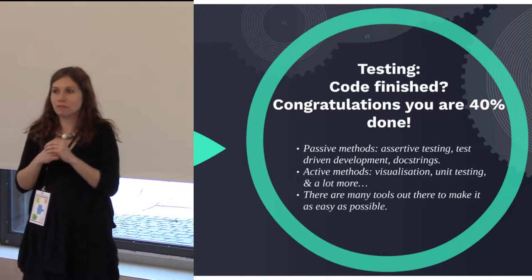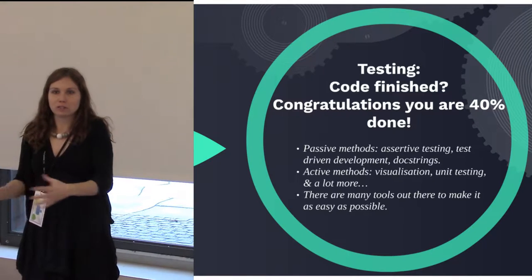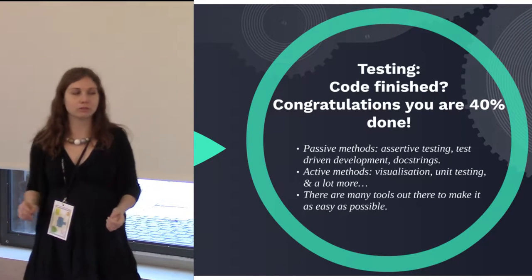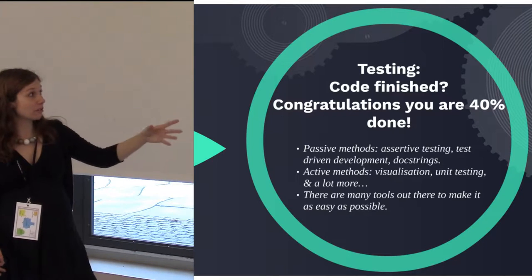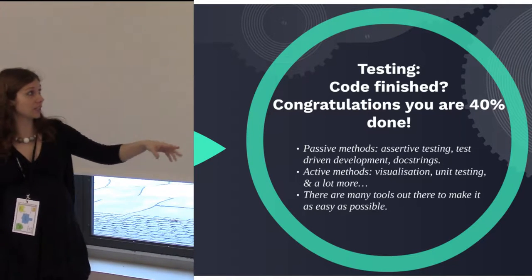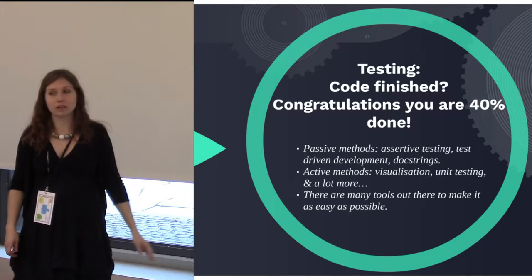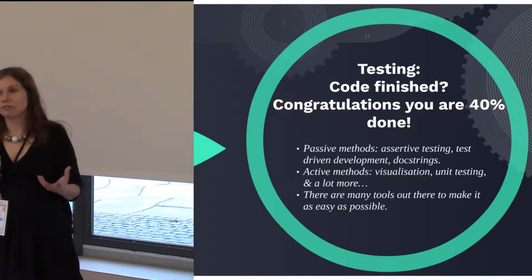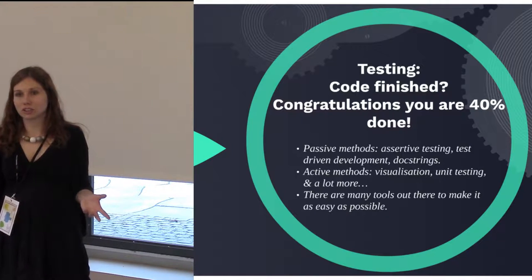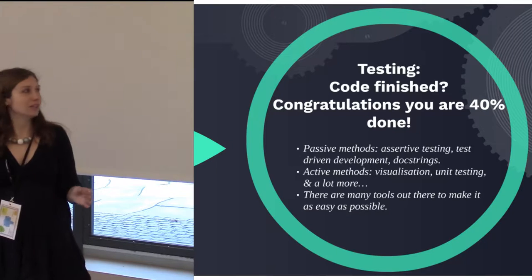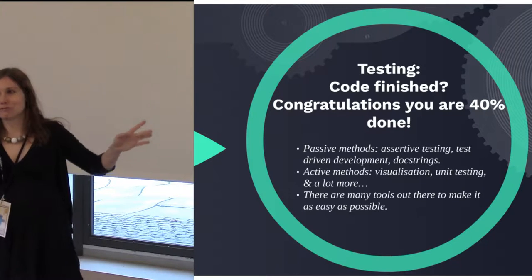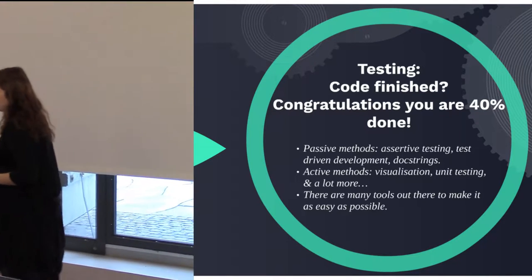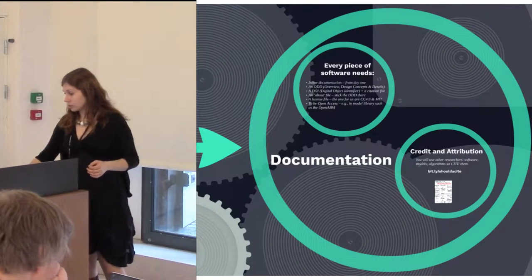There are many different testing methods developed for computer science that we can just use, because it's much easier to pick up tools that are already available than creating new ones. You can use passive methods such as assertive testing or test-driven development, which are well described in the computer science literature. You can also use active methods — the one that everyone uses for NetLogo is just looking at it and seeing if it looks reasonable. It's not great, but it is a way of debugging the code.